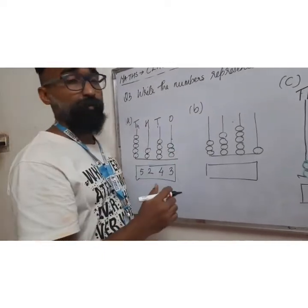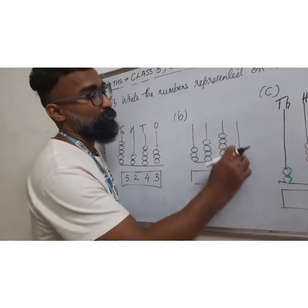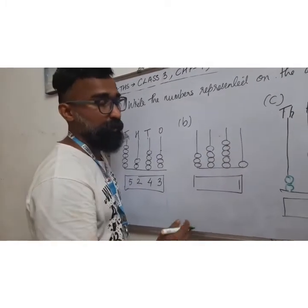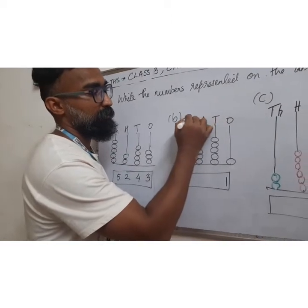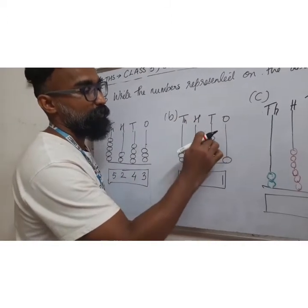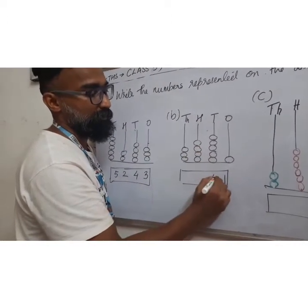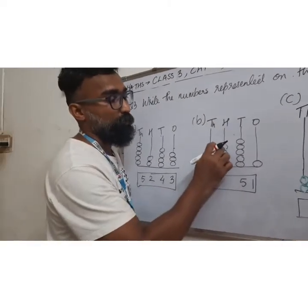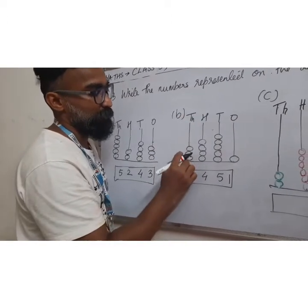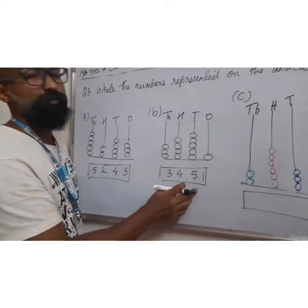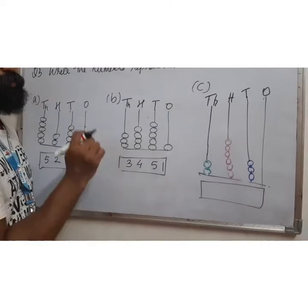If I go for question number 3b, again ones mein 1, 2, 3, 4, 5. Tens ke ghar pe 5 beats. Hundreds in the house, 1, 2, 3, 4. Four beats. Thousands in the house, 1, 2, 3. Three beats. So the number is 3,451.